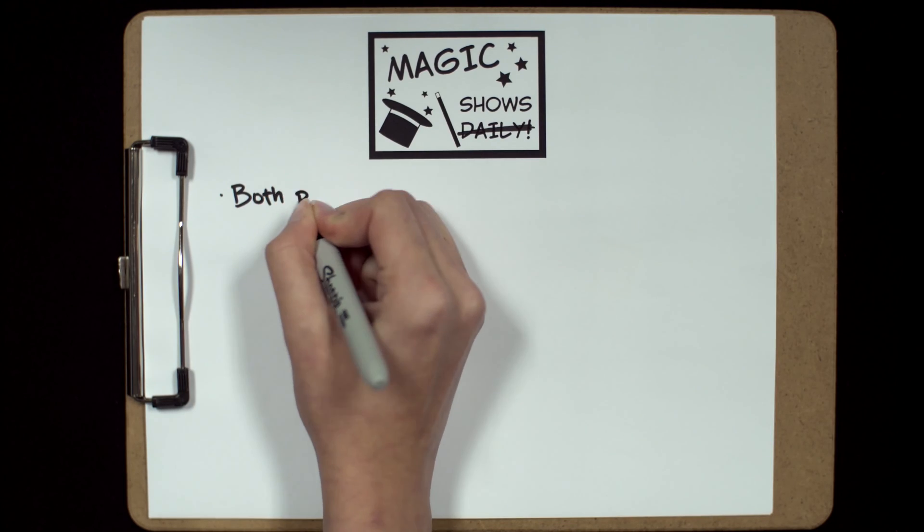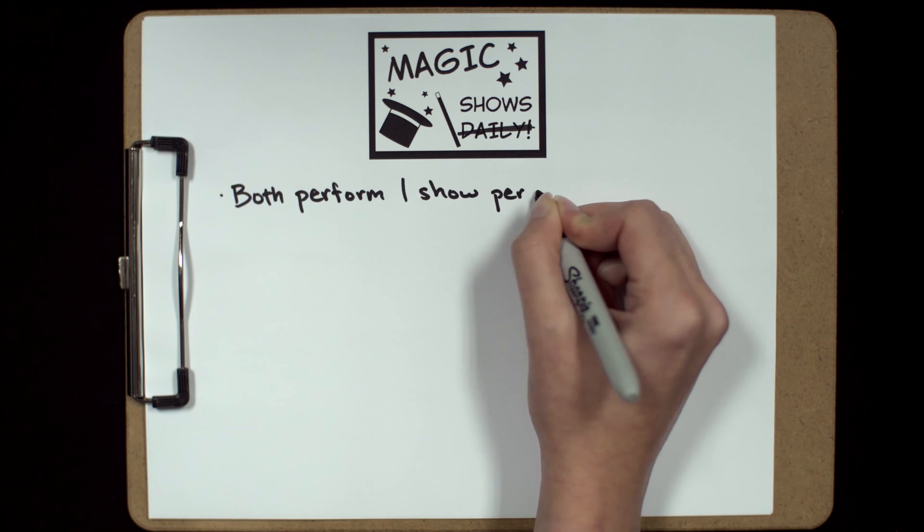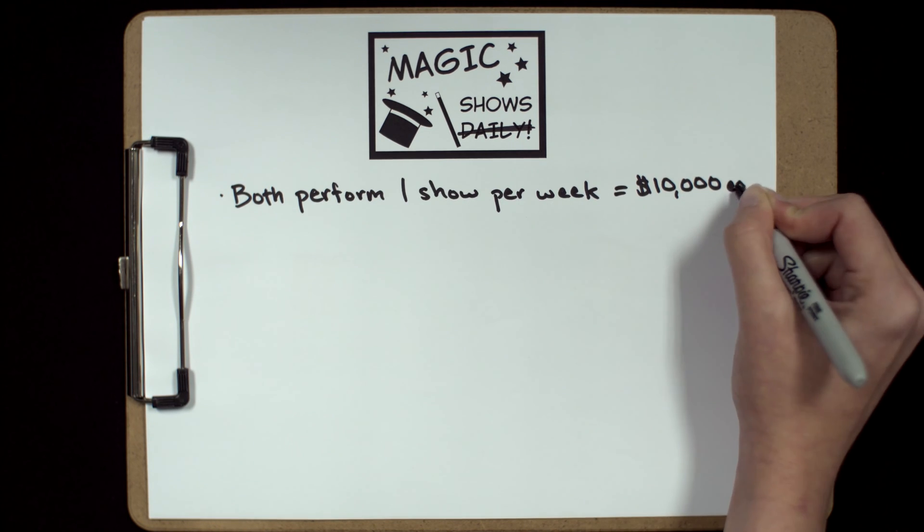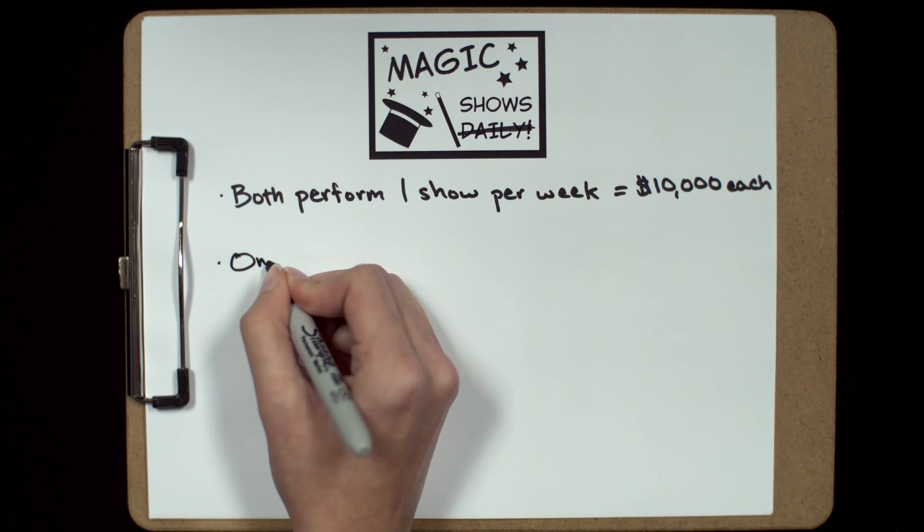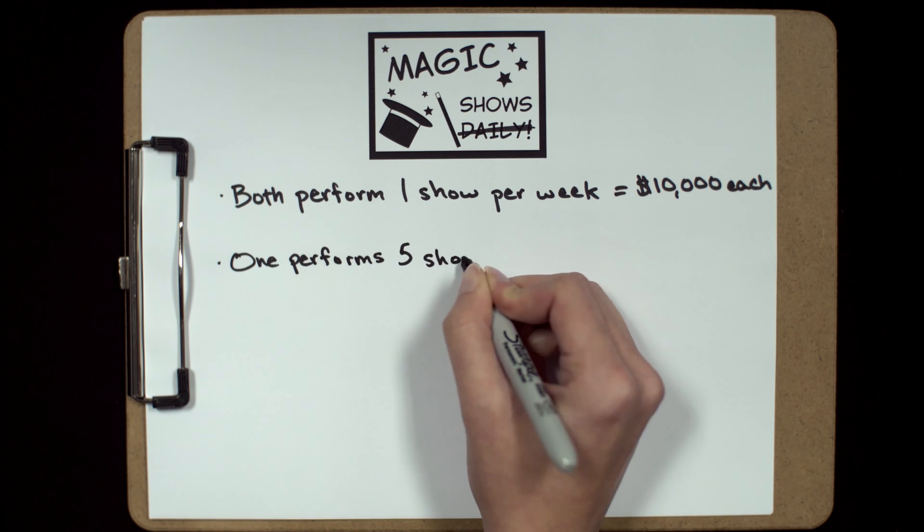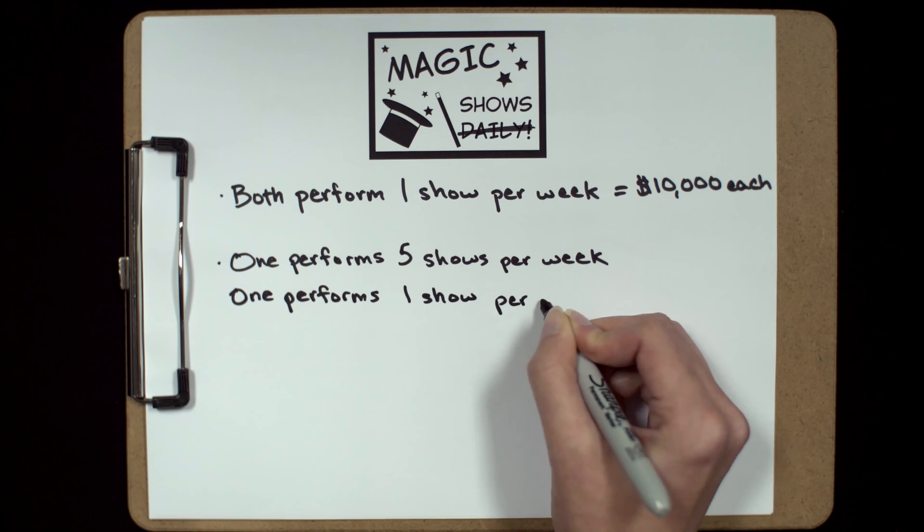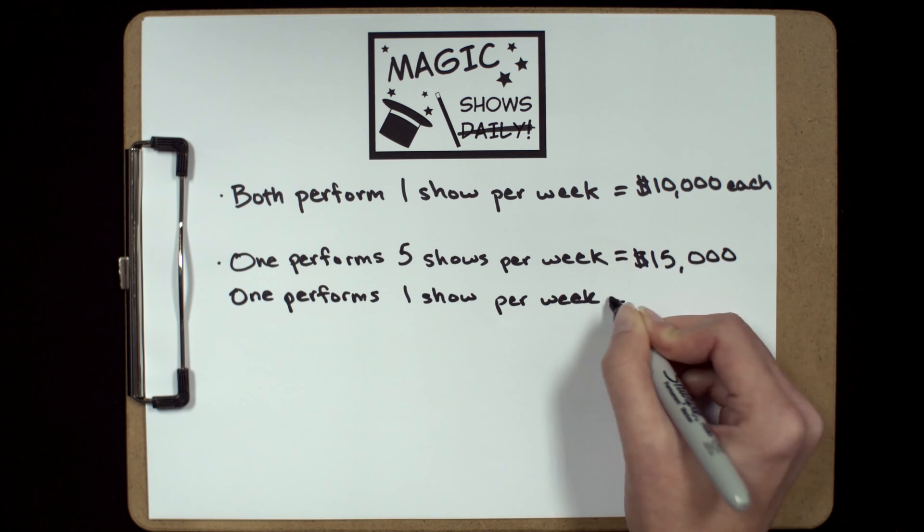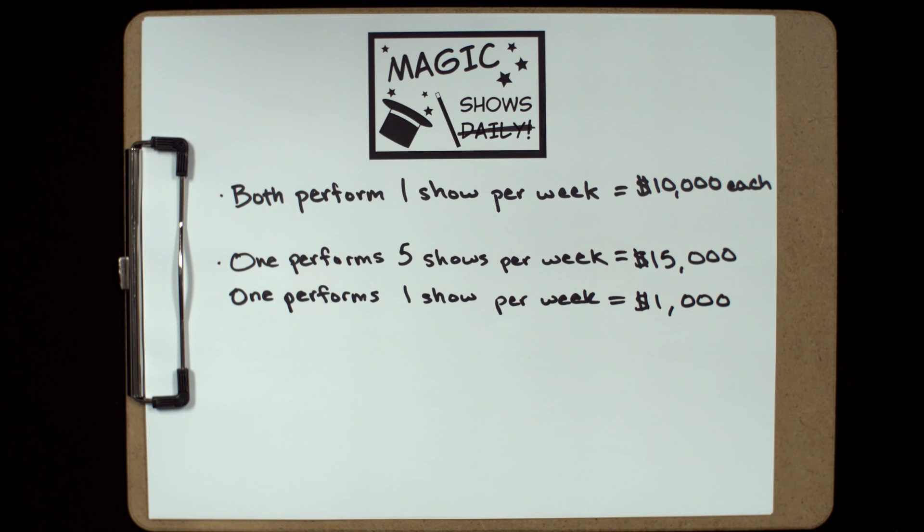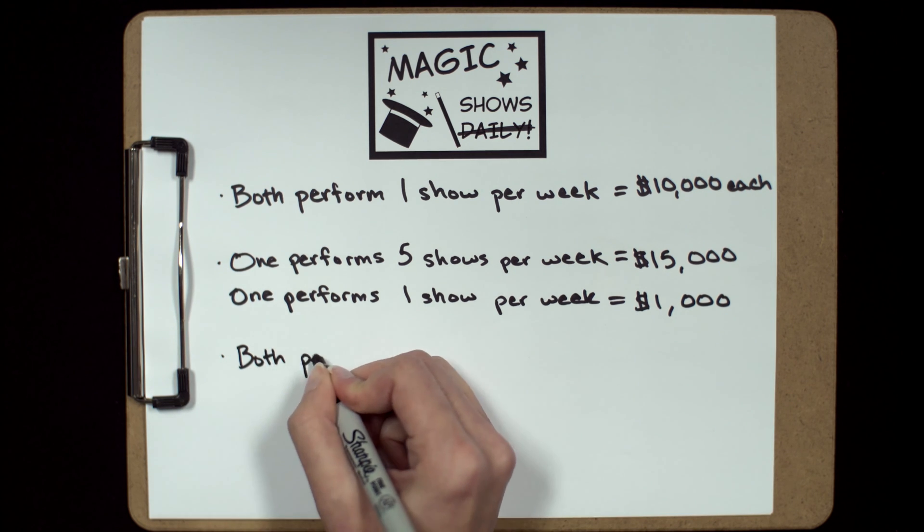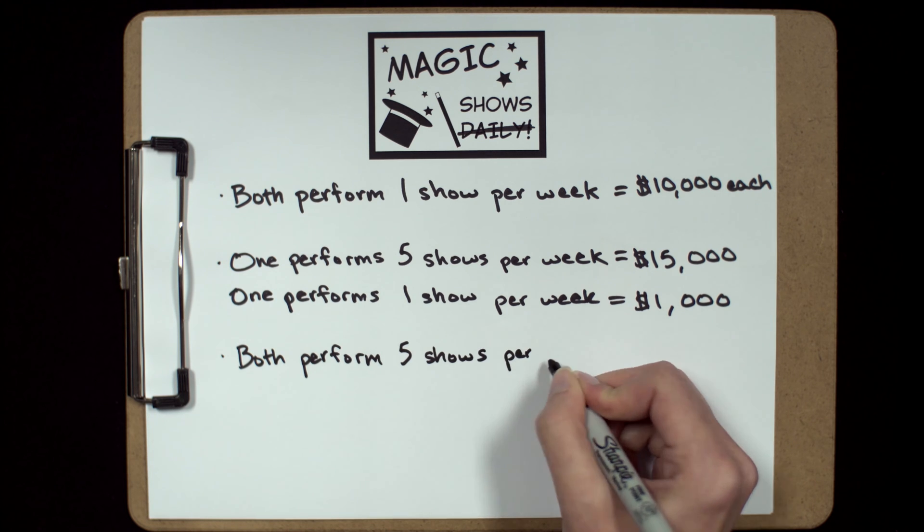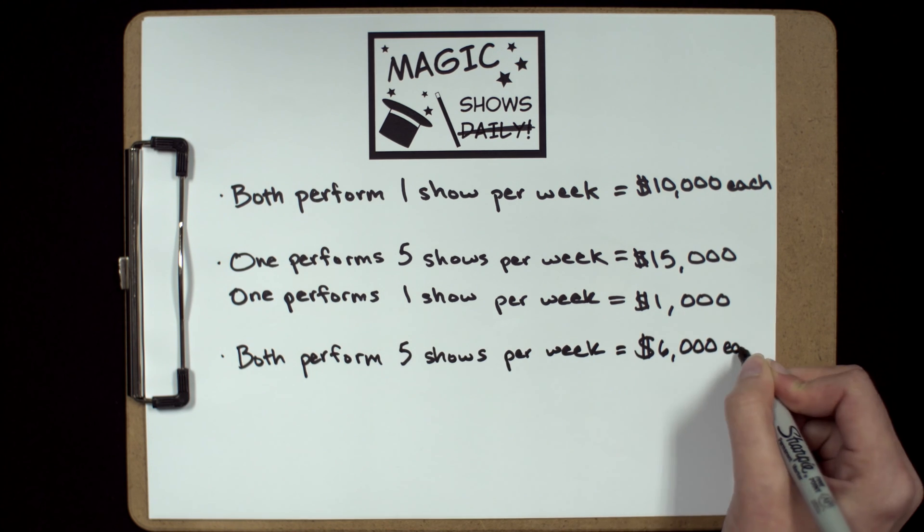If both magicians perform only one show a week, each will earn $10,000. However, if one magician breaks the agreement and performs five times a week while the other continues to perform once a week, that double crosser will make $15,000 while the other magician will make only $1,000. And if both magicians break the agreement and perform five times a week, each will earn $6,000.